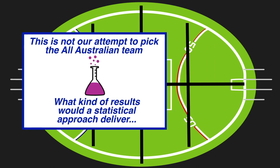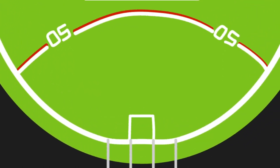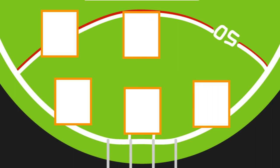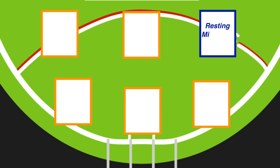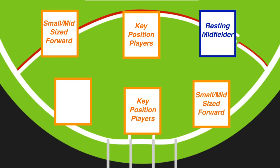In the theme of keeping things different, we decided to start with the forward line. We decided to fill 5 of the spots with actual forwards, leaving one spot open for a resting, offensively minded midfielder, creating a dynamic that reflects how the game is played. The full forward and centre half forward roles would be key position players, with two spots going to small or mid-sized forwards, and a final spot dedicated to the pressure forward — a role that has become crucial to a side's success.